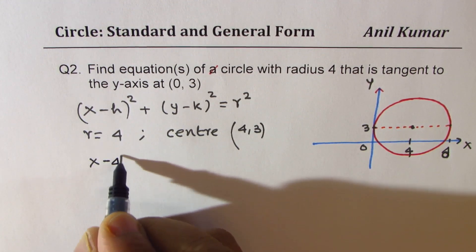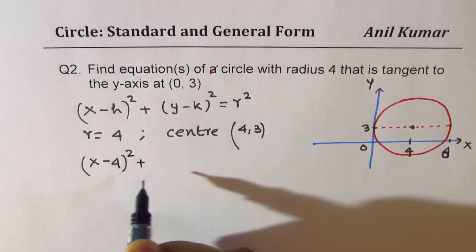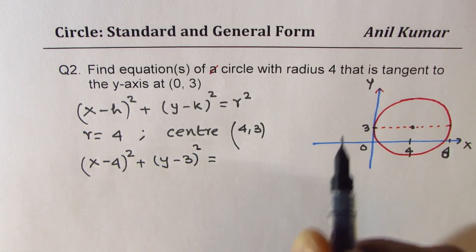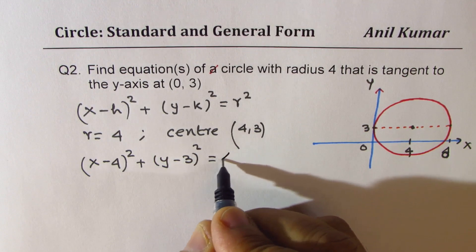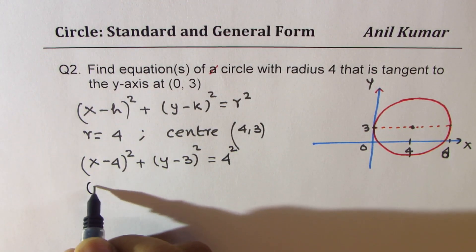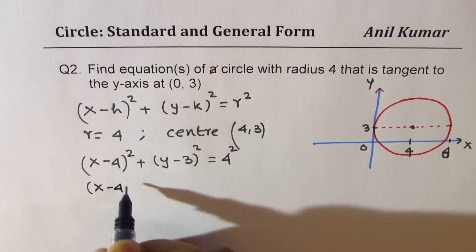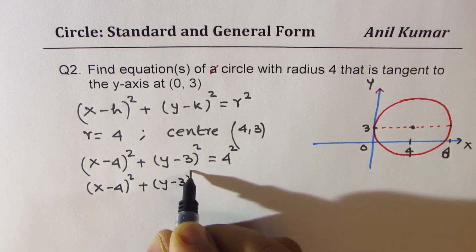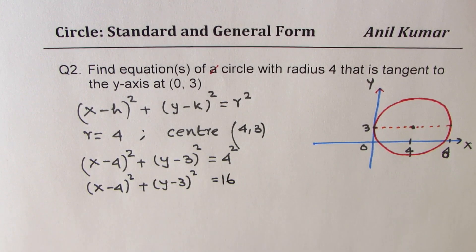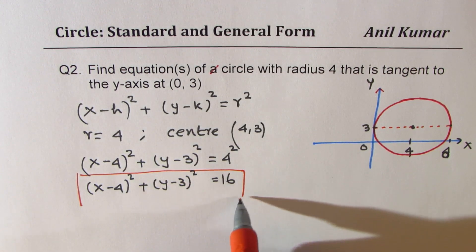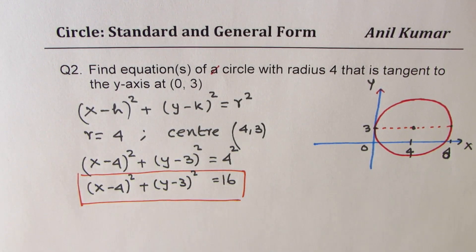So I can write the equation of the circle as (x - 4)² + (y - 3)² = 4², which gives us (x - 4)² + (y - 3)² = 16. That is one of our equations.